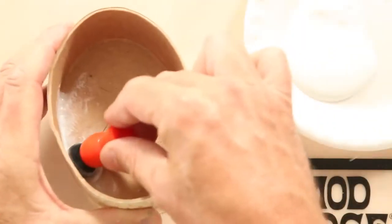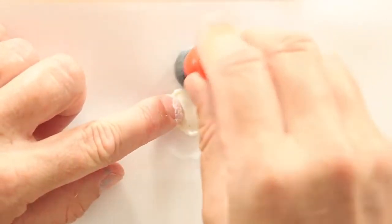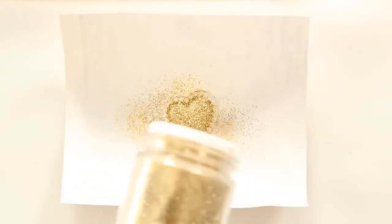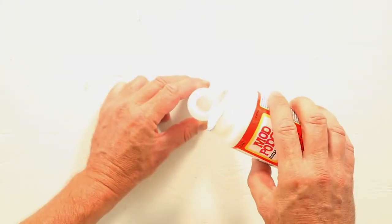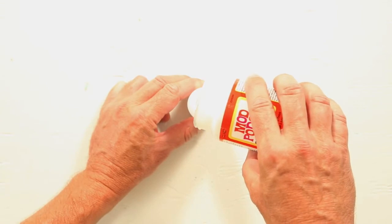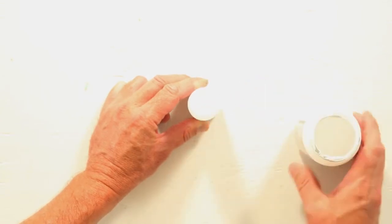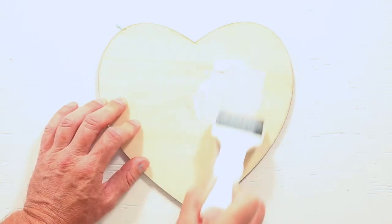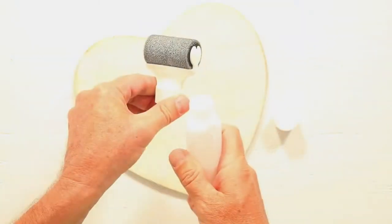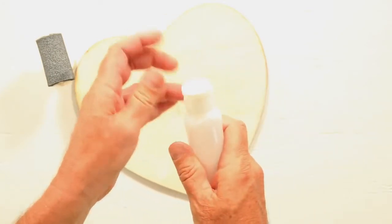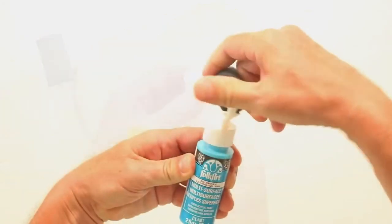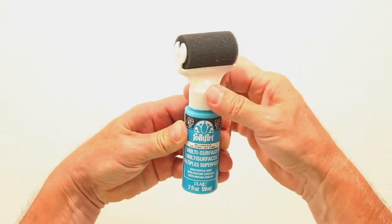The sponges are great for applying Mod Podge to small spaces and to Mod Melts. The roller tops are great for kids and groups. Pour Mod Podge into the bottle. Attach the roller and apply. Wash with soap and water. They also attach to 2 ounce paint bottles.